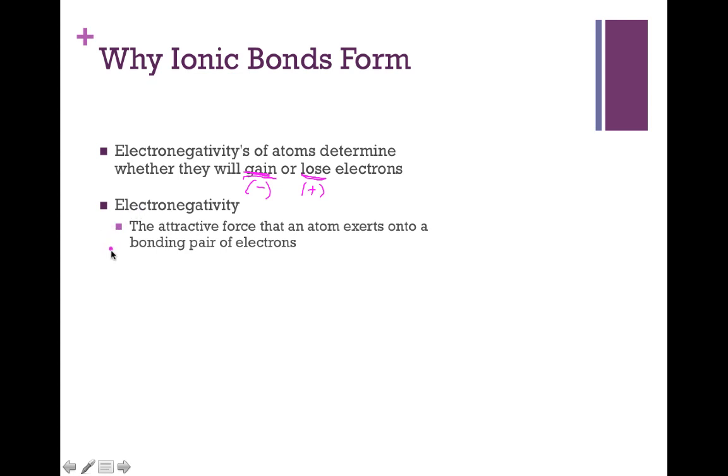So if you recall, we defined electronegativity last chapter. It's the attractive force that an atom exerts on a bonding pair of electrons. If atoms have a very high electronegativity, that means they have a very strong pull. This means they are more likely to get electrons, and as a result, form an anion or something with a negative charge.